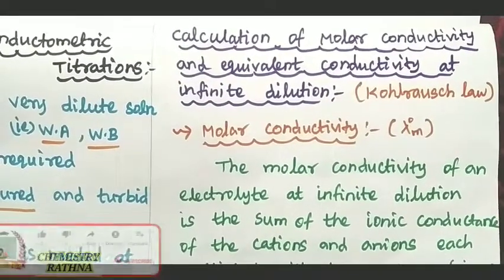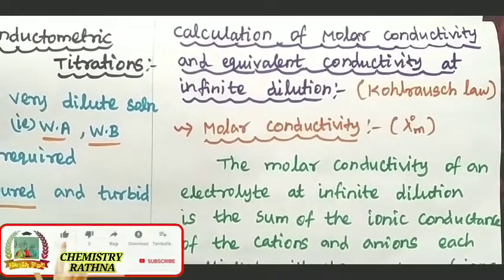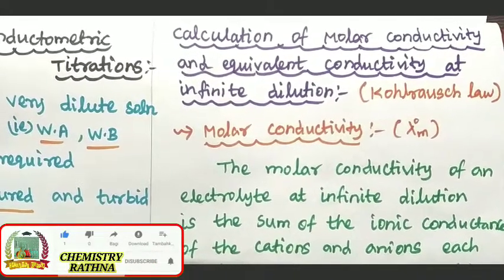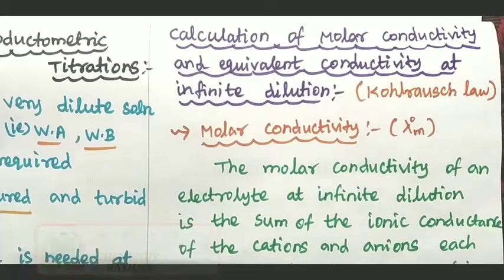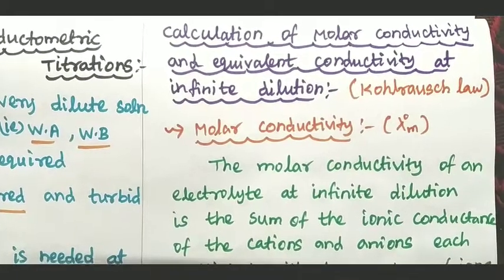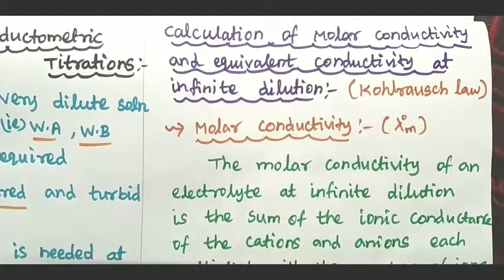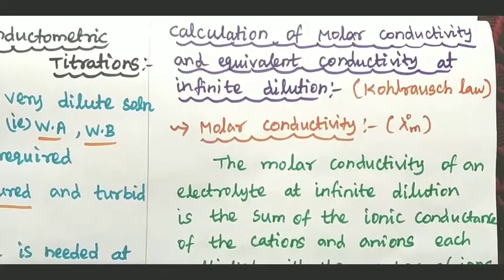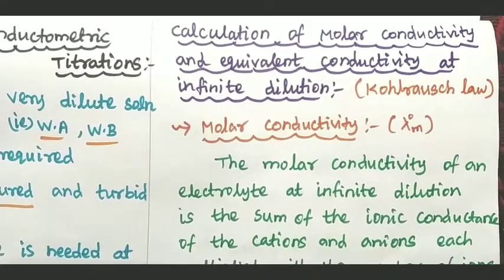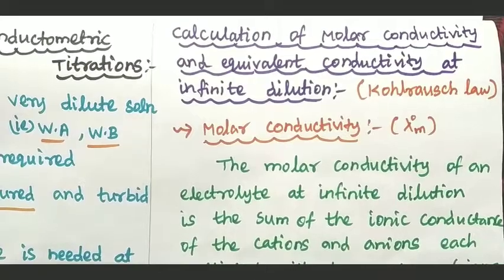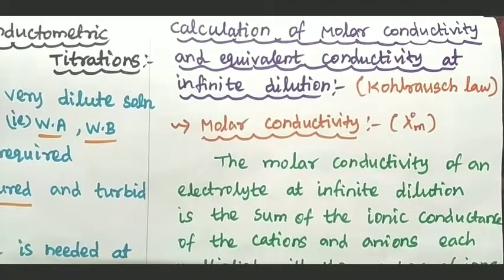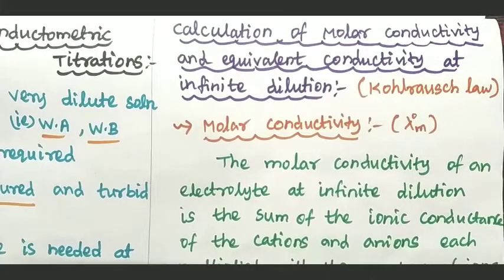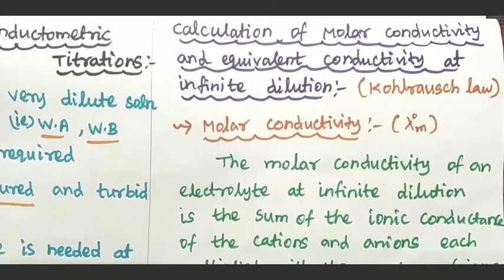Welcome to PGTRB Unit 9. We will continue to see the video of PGTRB Unit 9. We will cover electrolytes and dilution at infinite dilution — specifically formulas based on numericals, especially the numericals from the last TRB exam. It will be very simple, so we will see the full concept.